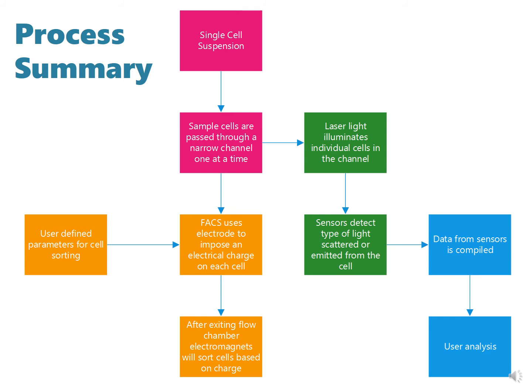Additionally, information from the signal can be combined with user-defined parameters to sort cells. FACS uses electrodes to impose an electrical signal on each cell. After exiting the flow chamber, electromagnets will sort the cells based on their charge.